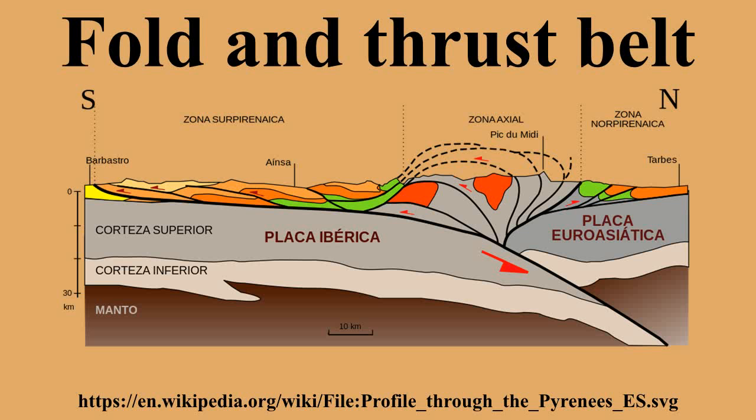A fold-and-thrust belt is a series of mountainous foothills adjacent to an orogenic belt, which forms due to contractional tectonics. Fold-and-thrust belts commonly form in the foreland adjacent to major orogens as deformation propagates outwards.